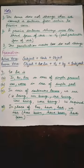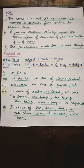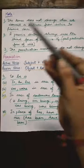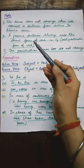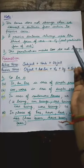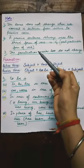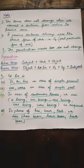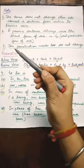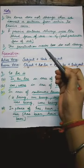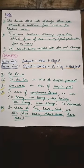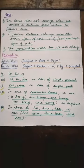It means जब हम अपने sentence को active से passive voice में change करते हैं, तो हमारे sentence का tense change नहीं होता. Now move to point number two: a passive sentence always uses the third form of verb, that is the past participle form of verb. It means passive sentence में हमेशा third form of verb का use किया जाता है. Now point number three: the punctuation marks do not change. अगर आपके sentence में कोई punctuation marks दिये गए हैं, तो आप उन्हें change नहीं करोगे.